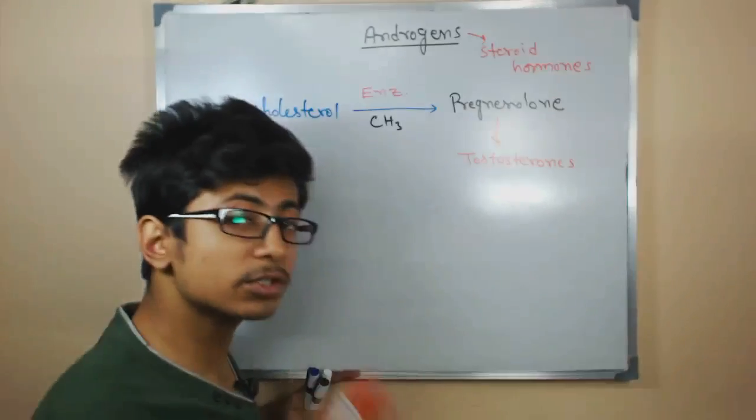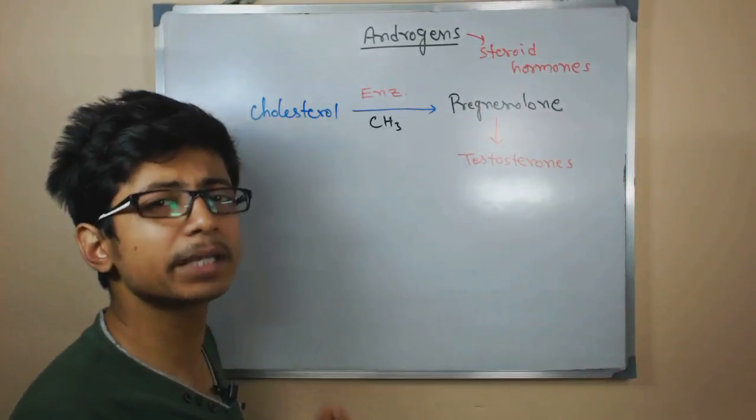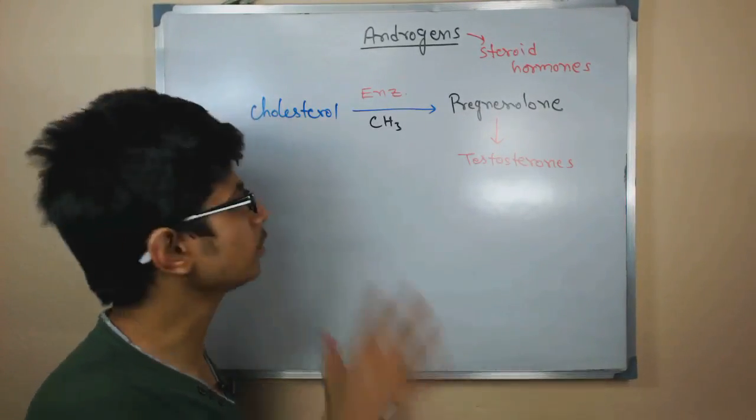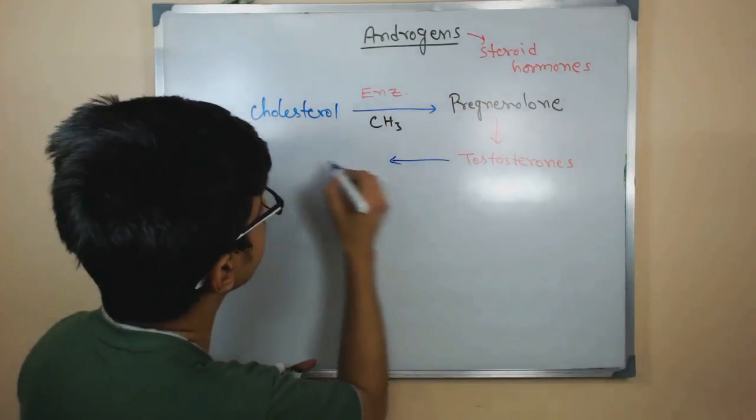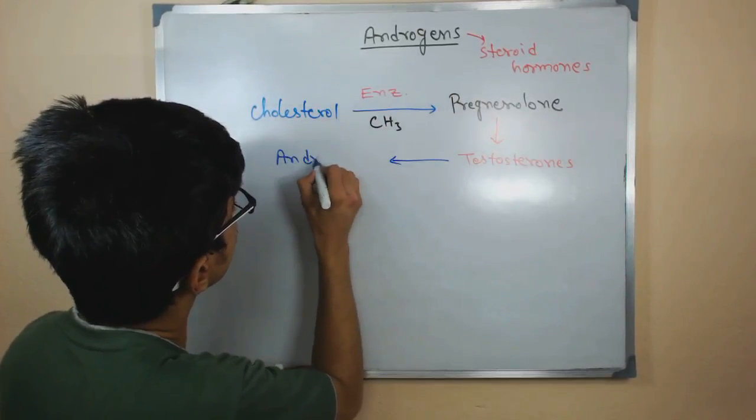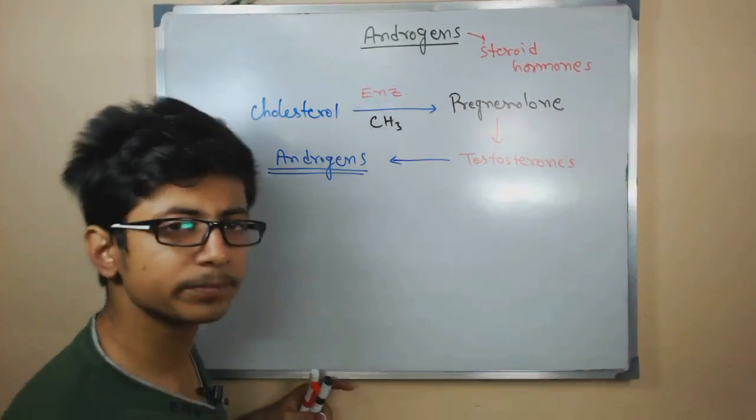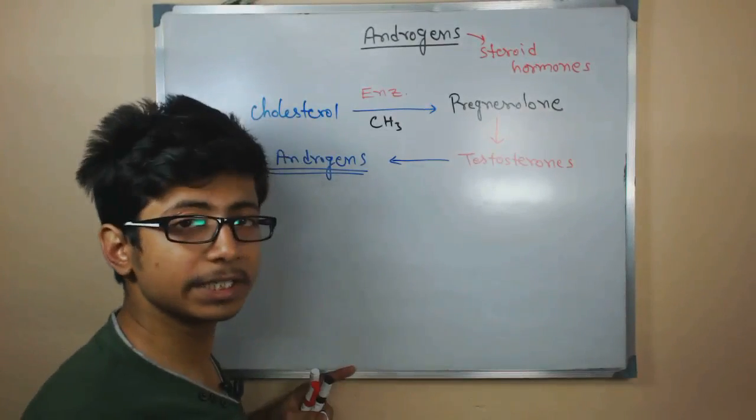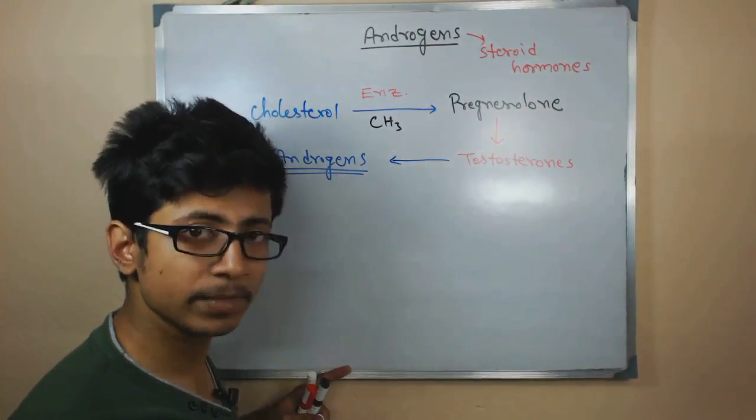Once testosterone is produced, that testosterone can be further modified by different chemical group addition, same thing can go on here. That will be modified to, for example, different types of androgens, different types of androgens which we are talking here. Testosterone, obviously, is one of the most predominant type of androgens found in male body.